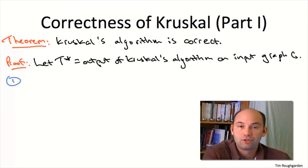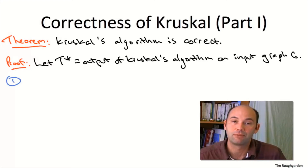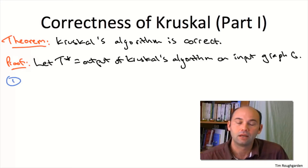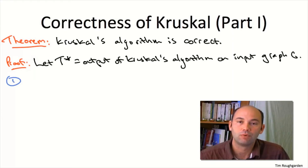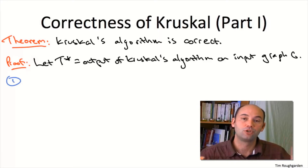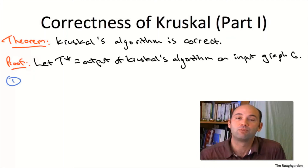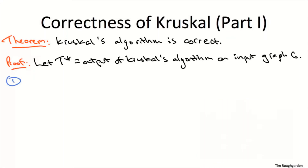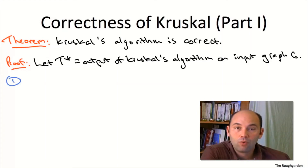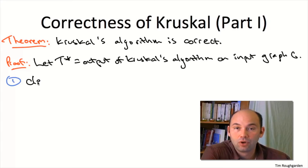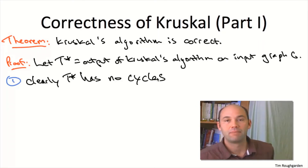We'll first establish the more modest goal that Kruskal's algorithm outputs a spanning tree — not making any initial claims about optimality. The first two steps are: one to argue there are no cycles, and one to argue that the output is connected. Then in the third step, relying on the cut property, we'll say it's not just a spanning tree but actually the minimum cost spanning tree. The first step is easy: it's quite obvious from the pseudocode that Kruskal's algorithm won't produce any cycles, since every edge that creates a cycle is explicitly excluded from the output.